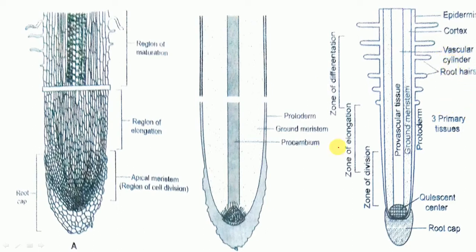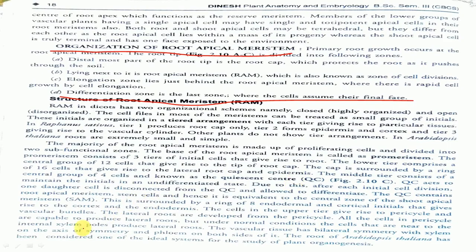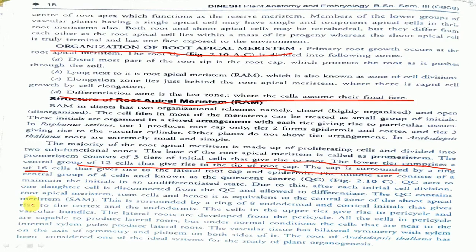The majority of the root apical meristem is made up of proliferating cells, divided into two sub-functional zones, and this zone is known as pro-meristem. The pro-meristem consists of various tiers of initial cells that give rise to the root. The lower tier comprises a central group of 12 cells that give rise to the tip of the root cap.